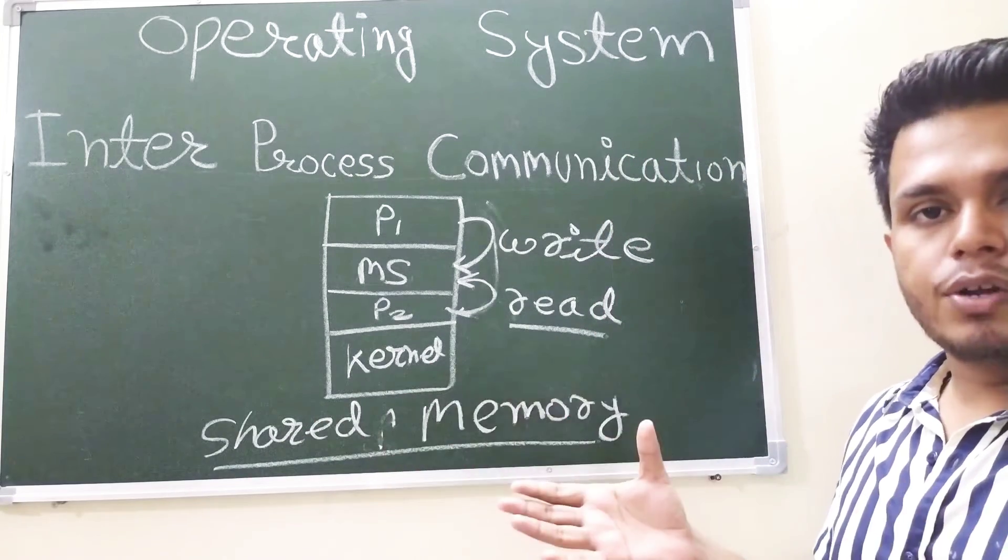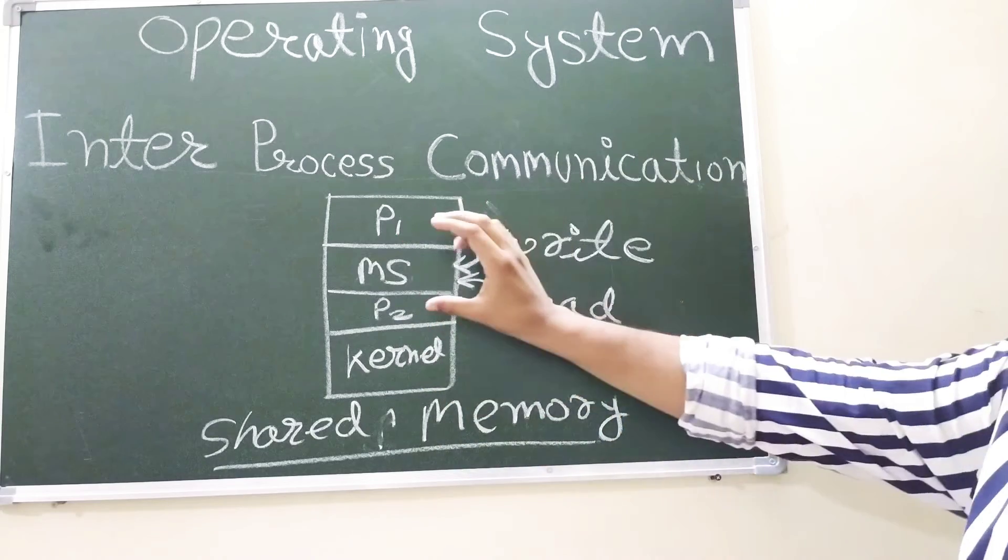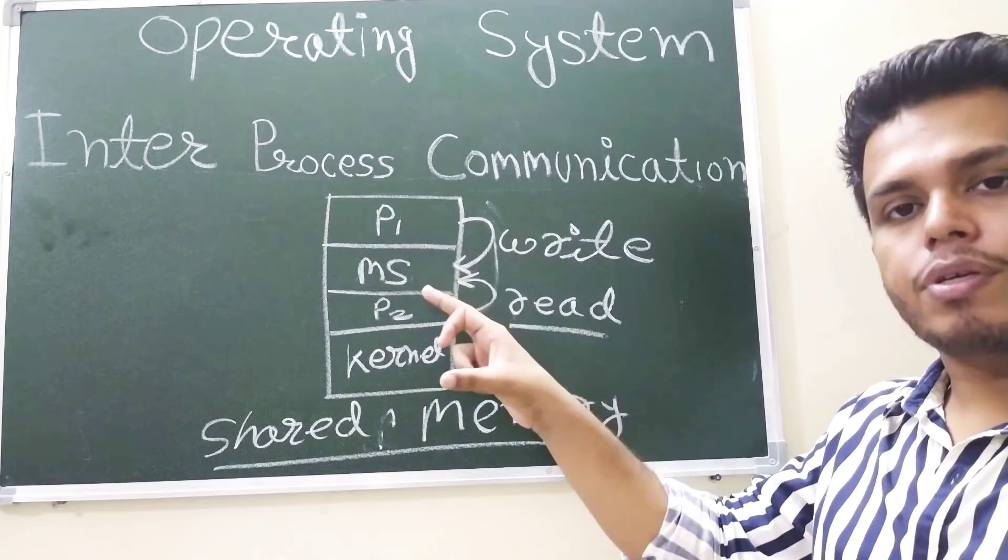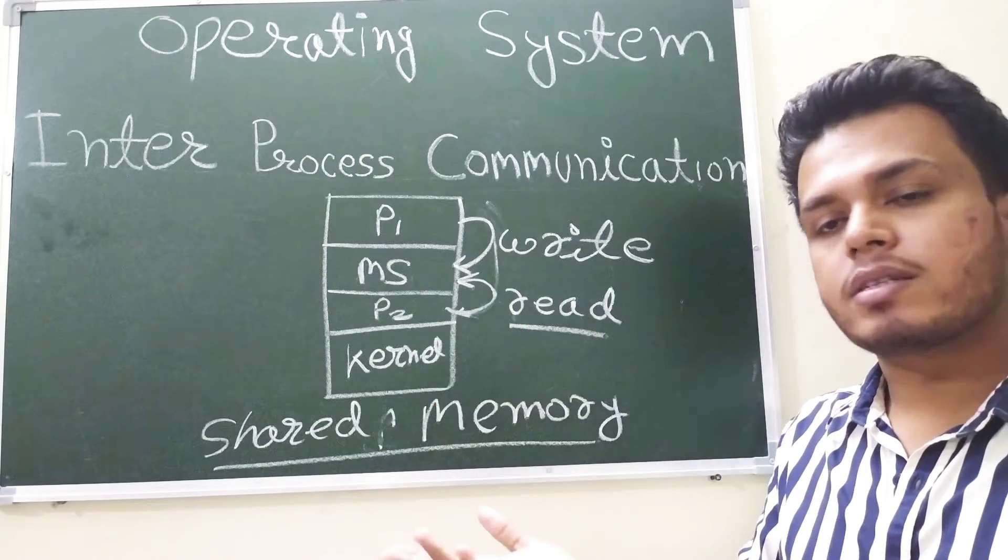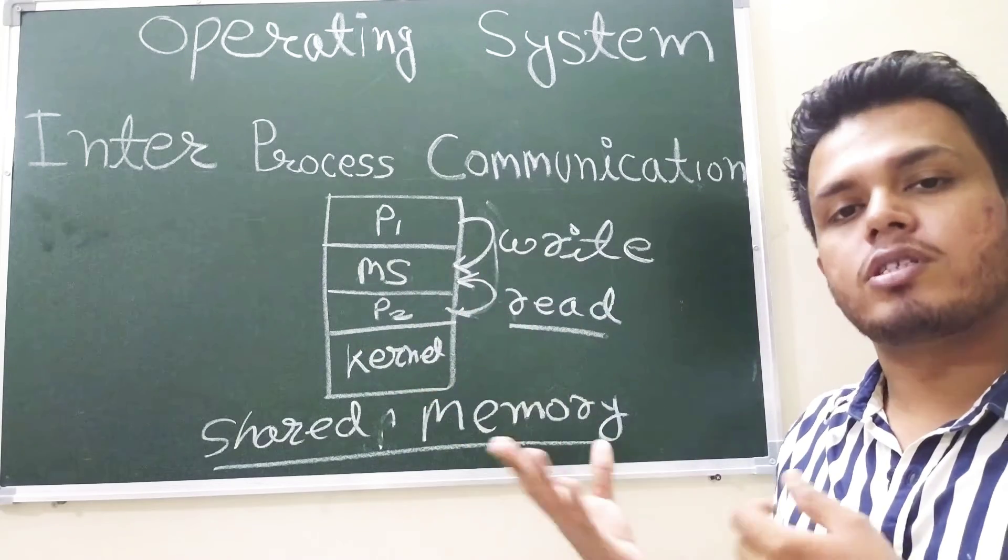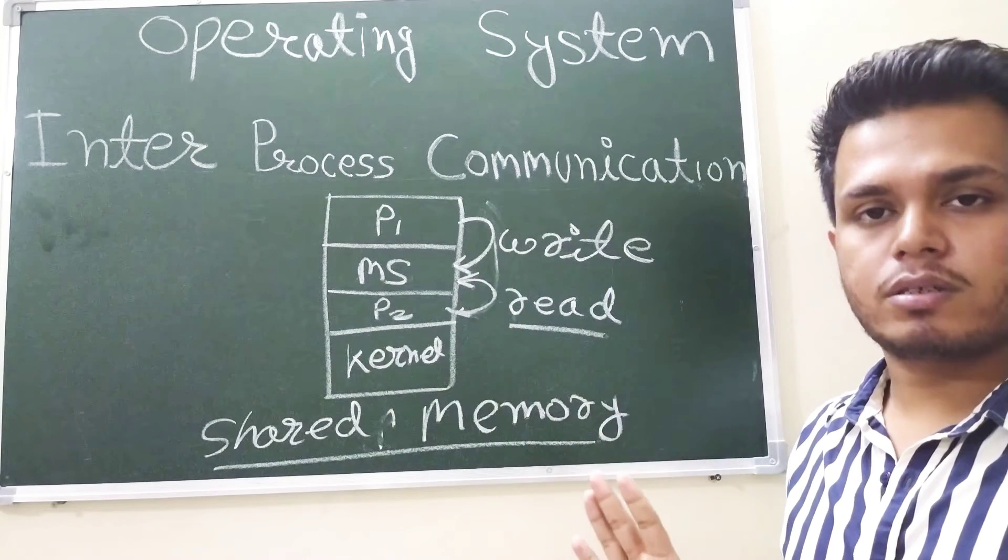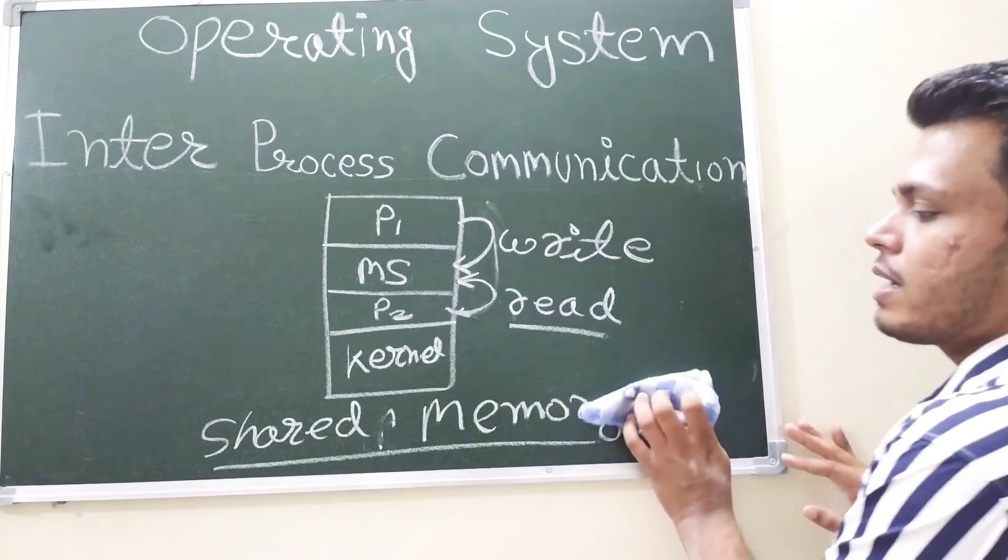In the shared memory, what we do, we simply provide the pool or we can provide the shared space in which processes write the data. If they want to send a message and if somebody wants to receive the message, he will simply read that particular message. This is all about the shared memory.